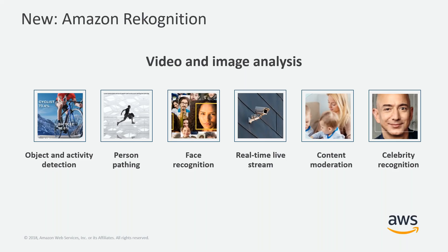Real-time streaming — I want to make sure I draw the distinction that this service is available with image stills as well as video feeds, so you can process either one. Content moderation is a great one for any service that's going to be publishing pictures from users, from social sites — you can detect and filter out mature content before it's published. And last but not least, we have celebrity recognition, because sometimes you just need to recognize celebrities.